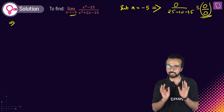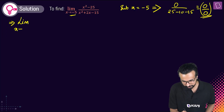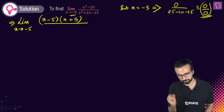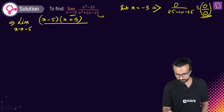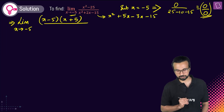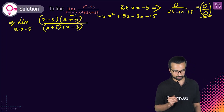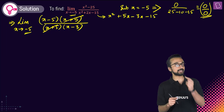We factorize: x²-25 = (x-5)(x+5), and x²+2x-15 breaks down as x²+5x-3x-15 = (x+5)(x-3). So the limit becomes limit x tends to -5 of (x-5)(x+5) divided by (x+5)(x-3). Now (x+5) cancels out — x is tending to -5, not exactly -5, so we can cancel.